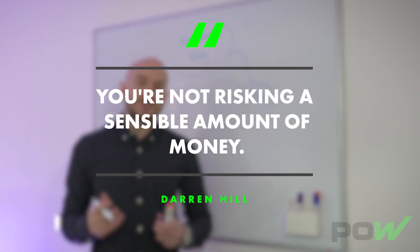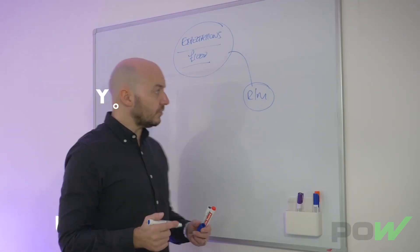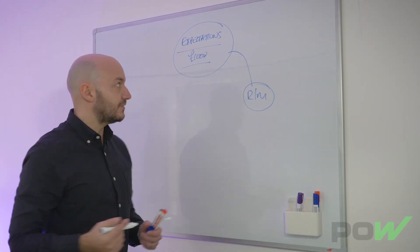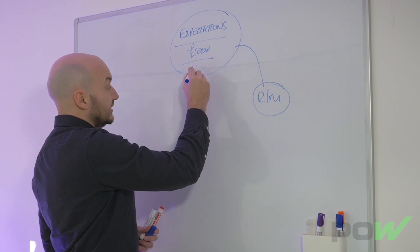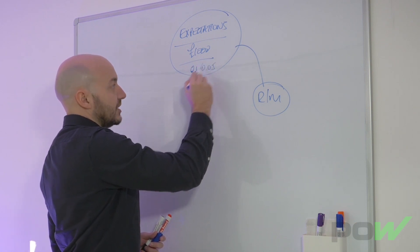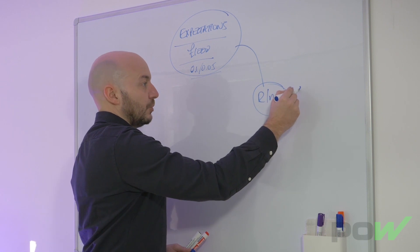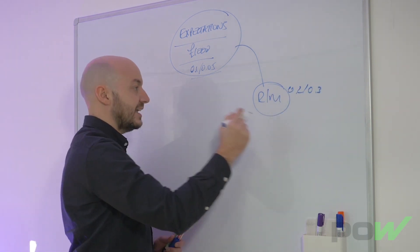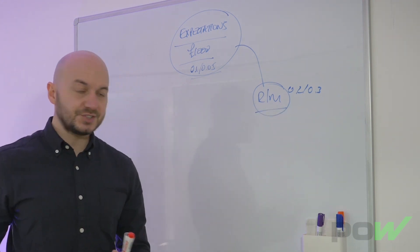Because in order to achieve them gains, you are not risking a sensible amount of money at all. You will be trading far too high a lot size. Instead of trading, let's say, 0.01 to 0.05 dependent upon your lot size, you'll probably be trading 0.2, 0.3, 0.5 or whatever. So because this is too aggressive and not sustainable.